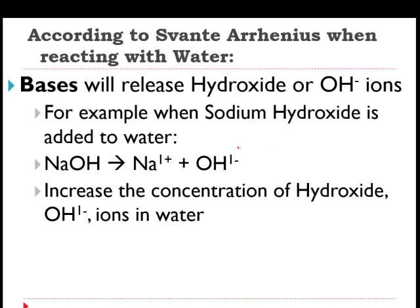Upon further research, Svante Arrhenius realized that the yang to the yin that are acids must be these things called bases. At the time, the technology and experimentation that Svante did could only find that the only thing that would actually attract those H+ ions and counteract and protect water from those acids was something that would actually release hydroxide ions, or OH⁻. So what he realized was anything that ended in OH or hydroxide must be a base, because when it dissociates, it's going to give us that hydroxide, and those OH⁻ ions are actually more attractive for any free-flowing H+ ions than water would be. Therefore it's stronger than water, it would neutralize an acid, and therefore the base is born.